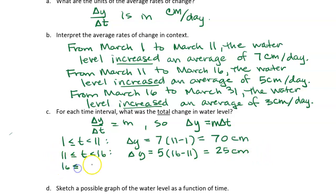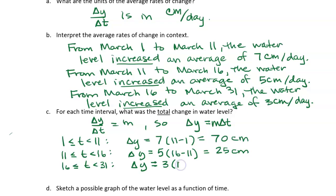For the interval from March 16th to the 31st, the average rate of change was 3 centimeters per day. How many days is that? 31 minus 16 is 15 days. So 3 times 15 gives us 45 centimeters. Over that 15-day period, the water level rose by 45 centimeters.